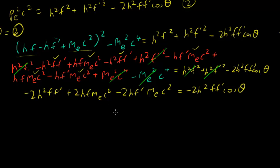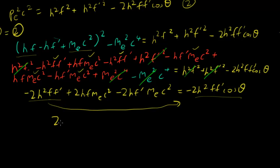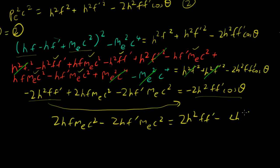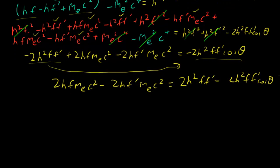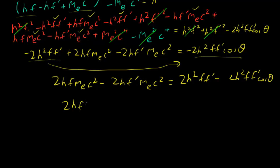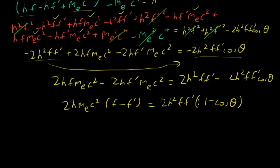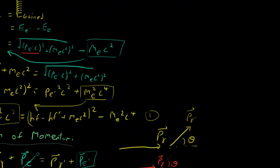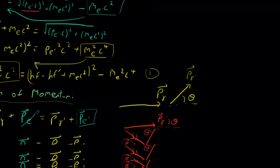This looks a bit large and not tidy, so let's tidy it up. We can group by common factors. We see 2hf · mₑc² minus 2hf' · mₑc² equals 2h²ff' minus 2h²ff' cos θ. We can factor out mₑc² to get (f minus f prime), and factor the right side to get (1 minus cos θ). When we see that (1 minus cos θ), a bell should ring because it's similar to the original equation — so we know we're on the right track.